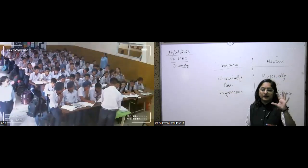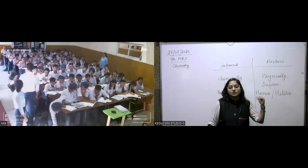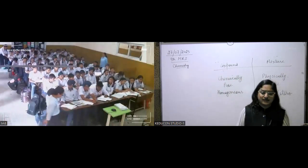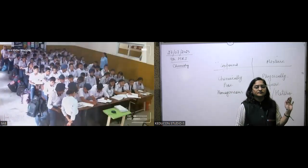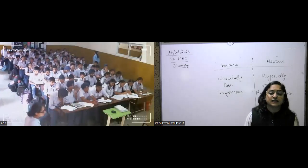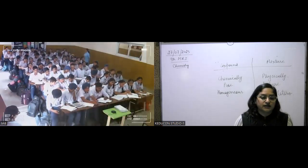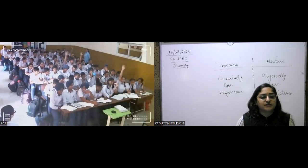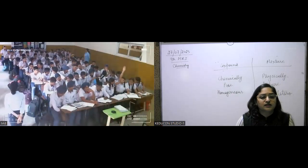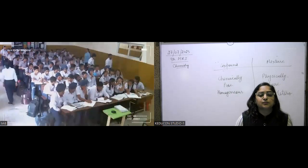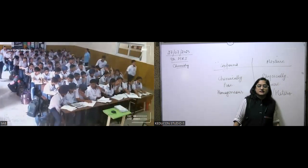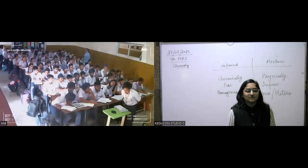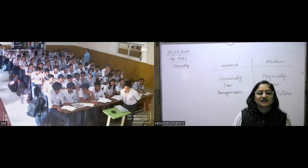In the periodic table, more than 70% of elements are metals, and a few are non-metals. Who can tell me the physical properties of metals? Metal is lustrous, hard, and ductile — very good, please sit.